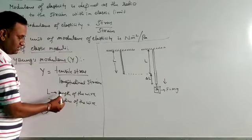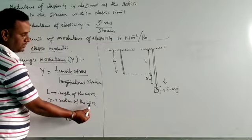I have written here: length l means length of the wire, r means radius of the wire.